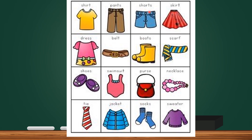Number seven: boots. Boots. B-O-O-T-S. Boots — please remember there is an S at the end. Boots is a type of shoe that covers the whole foot and the lower part of the leg. Number eight: scarf. Scarf. S-C-A-R-F.